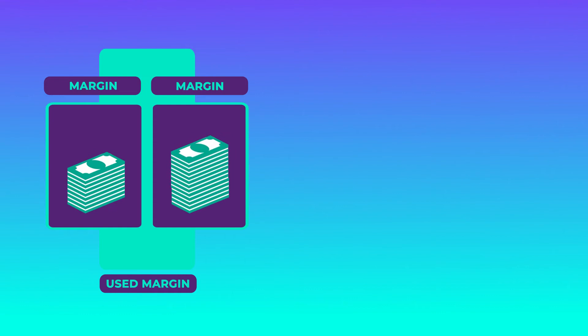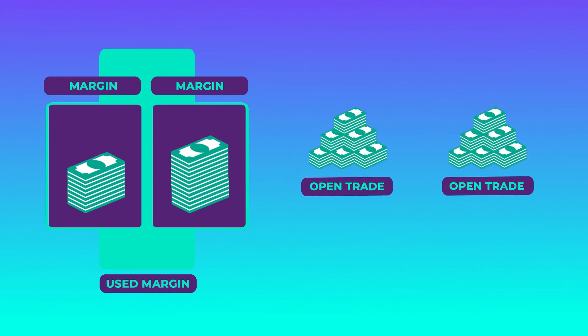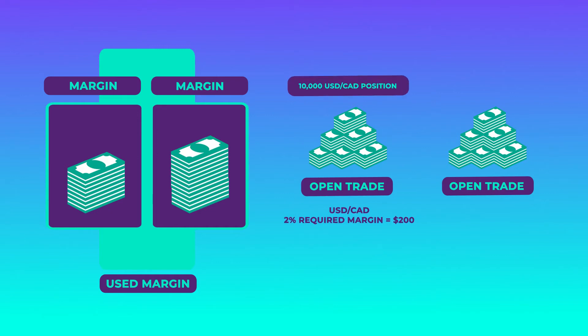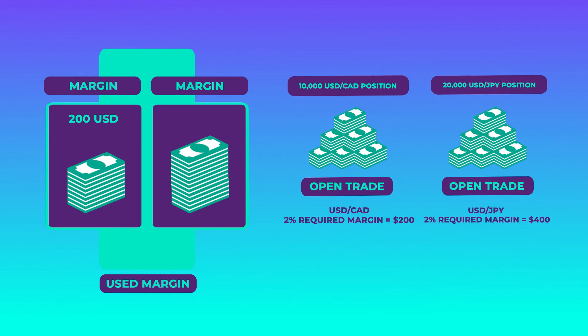Used margin is the sum total of all the margin you've put in to open all your trading positions. For example, if there is a 2% margin requirement to open a 10,000 USD/CAD position, your required margin is 200 USD. If you also want to open a 20,000 USD/JPY position with a 2% margin requirement,